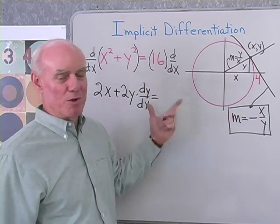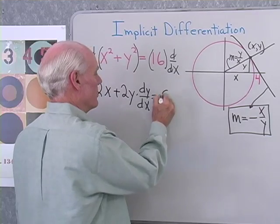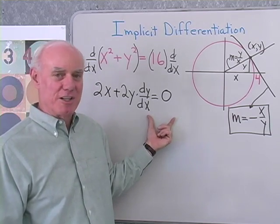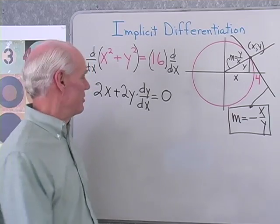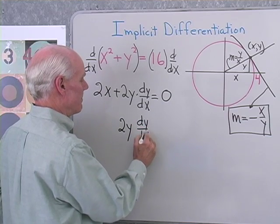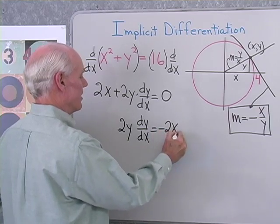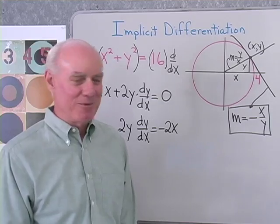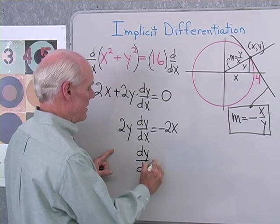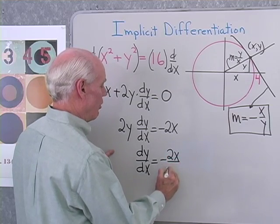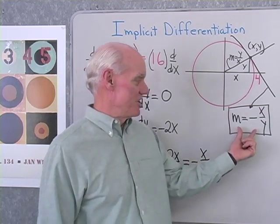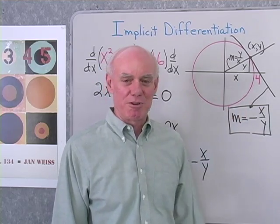When I differentiate 16 with respect to anything, that's a constant, so the derivative will be 0. So here's my derivative — it's not given explicitly, it's implied. Now I'm going to solve this for that derivative. 2y dy/dx is going to be equal to negative 2x. Dividing both sides by 2y, dy/dx equals negative 2x over 2y, which turns out to be negative x over y. And that's exactly what we predicted geometrically on the circle.